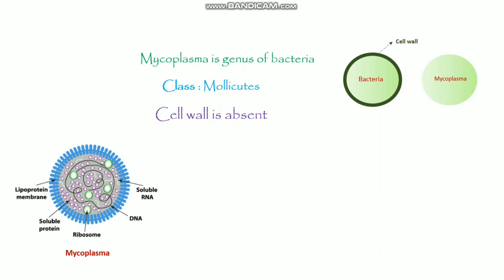Here is the difference between bacteria and mycoplasma. Bacteria has a cell wall, so broad-spectrum antibiotics like penicillin and streptomycin that we normally use for cell culture to kill bacteria work by interfering with cell wall synthesis. But in the case of mycoplasma, it does not work because mycoplasma has no cell wall. So for killing mycoplasma, we need to use a different kind of antibiotic that does not work by interfering with cell wall synthesis.